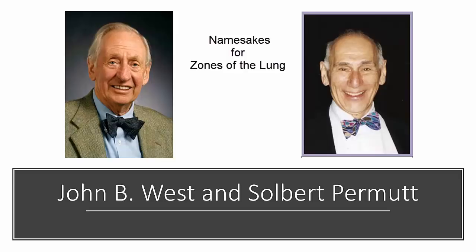These zones of the lung are often referred to as the zones of West, named after John B. West, a giant in the field of pulmonary physiology. He first published his book, Respiratory Physiology: The Essentials, in 1974. But what you may not know is that he wasn't the first to describe this idea. Dr. Salbert Permutt, who was one of my mentors, actually published the concept of the Starling resistor model describing the vascular waterfall back in 1960, 14 years before Dr. West. That's why you might hear me call it the zones of Permutt.